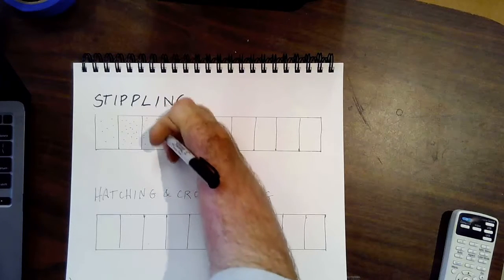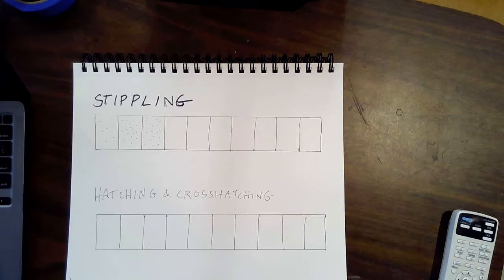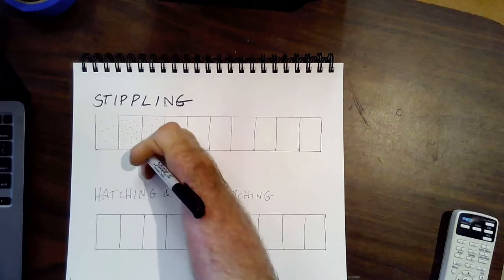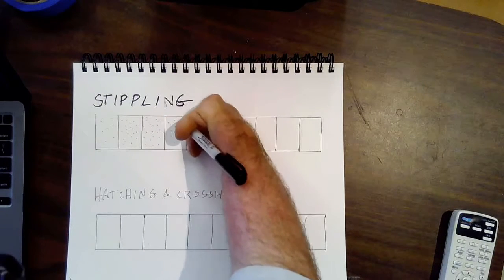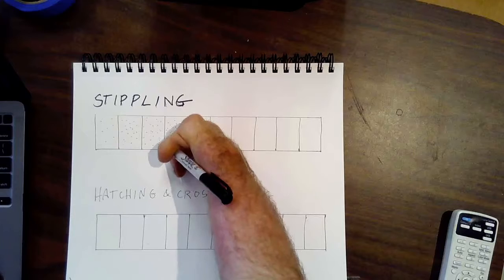what I would do is I wouldn't try to calculate how many dots you're going to put in boxes 2, 3, and 4 because you might get to the end of the value scale and realize that you don't have a good gradient, right?